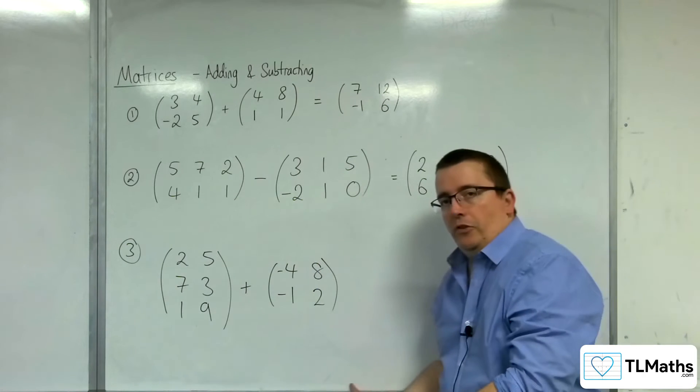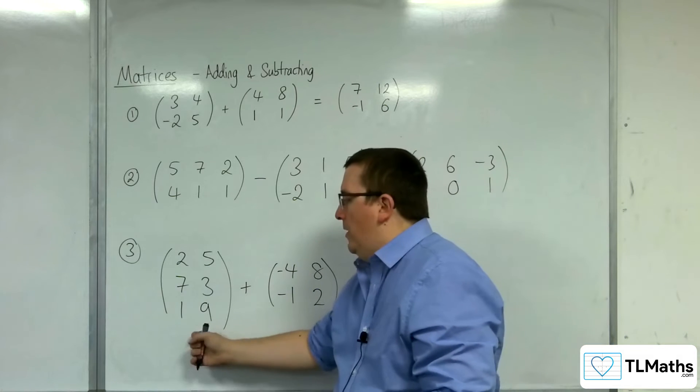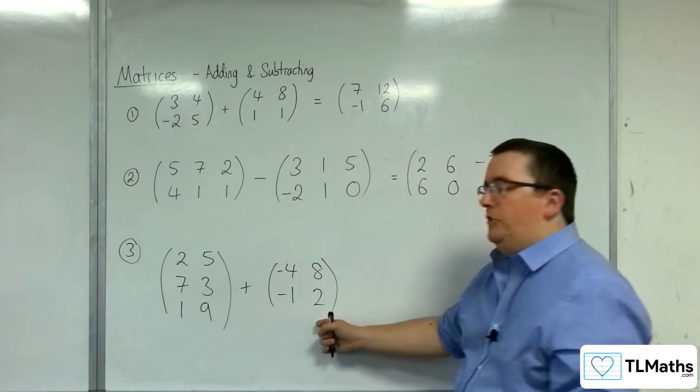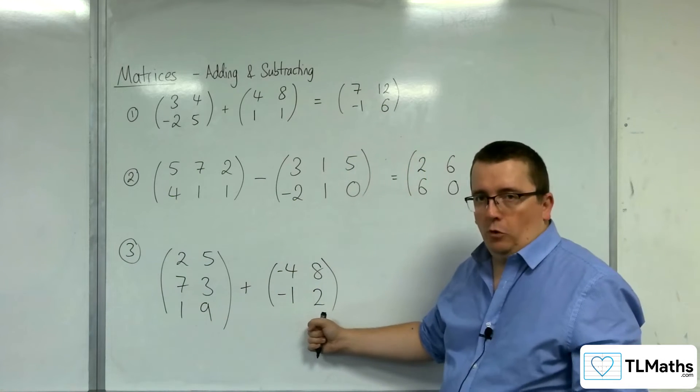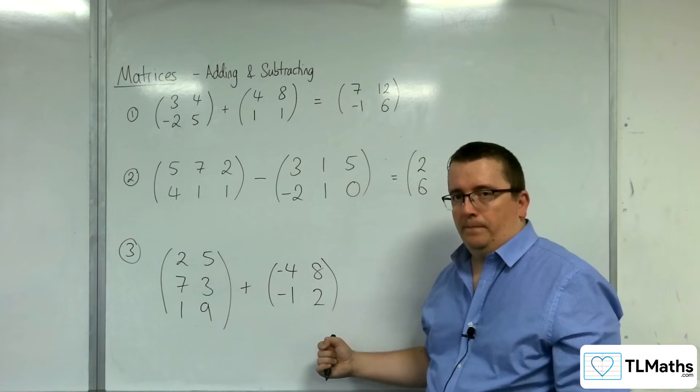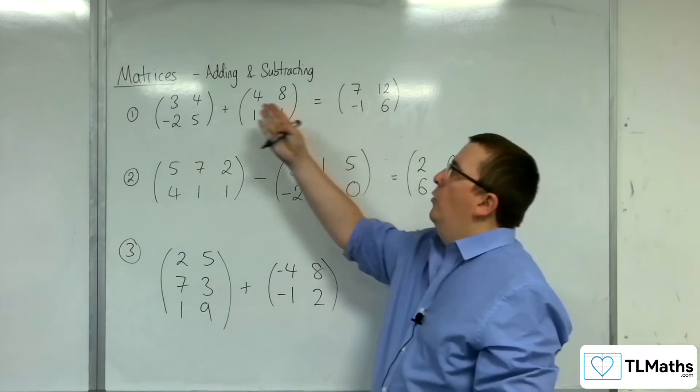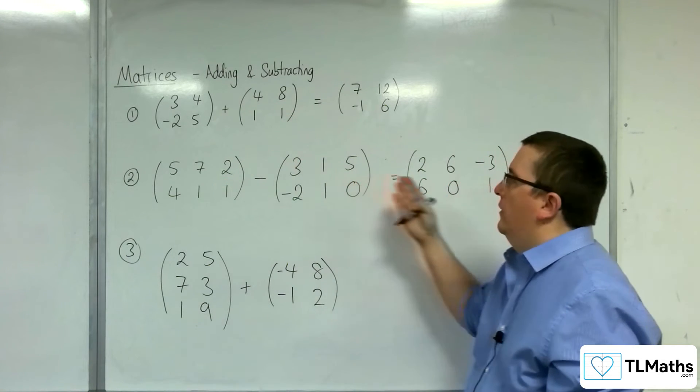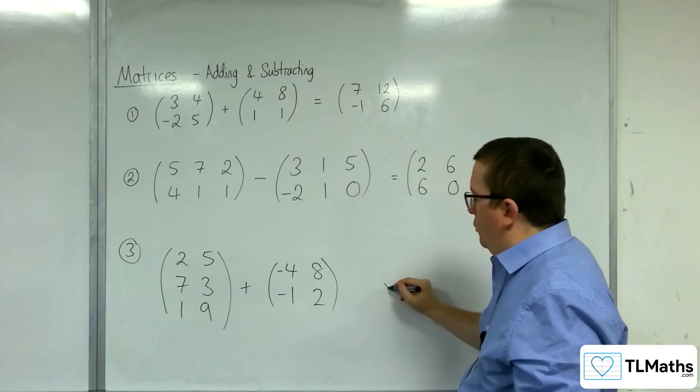Now when we get on to number 3, however, we have here a 3 by 2 matrix and a 2 by 2 matrix. When you have matrices of different orders, you cannot add or subtract them. You can only add or subtract them when the orders of the matrices are the same, just as they were in example 1 and 2. So I cannot do this.